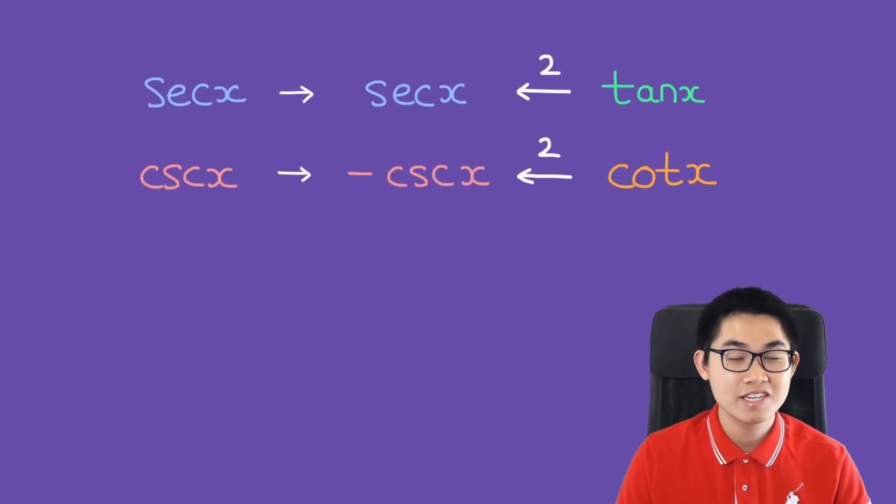I also draw this diagram, so we have secant of x, secant of x, down here is cosecant of x, and here is also cosecant of x. But just remember there is a negative sign here, and the arrow is pointing to the right. But over here, the arrows are pointing to the left, and then there's a number 2 at the top.